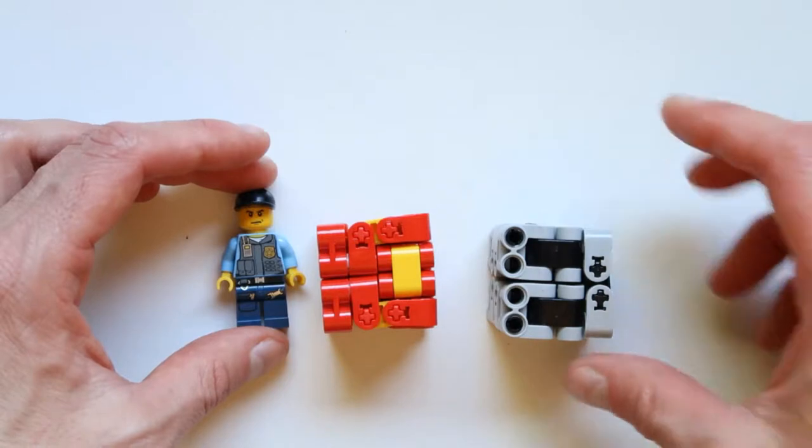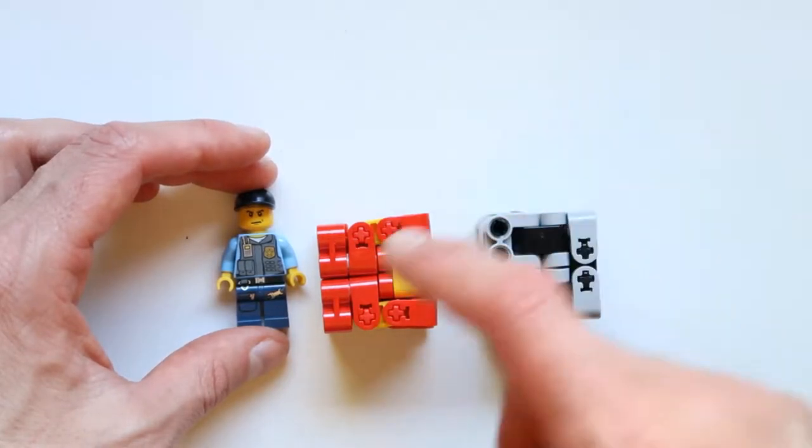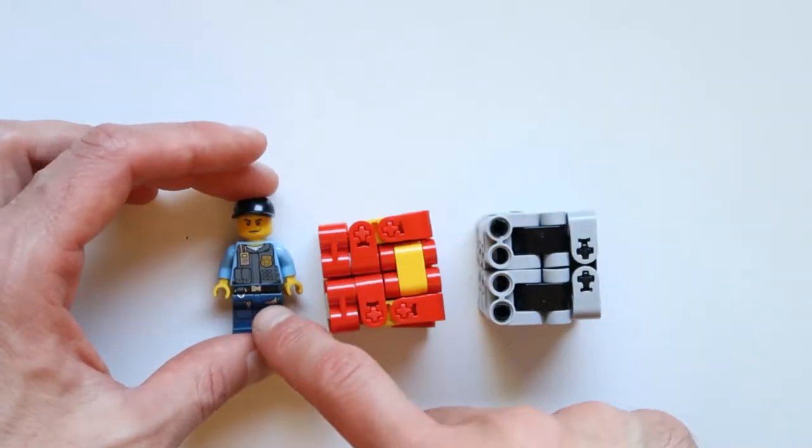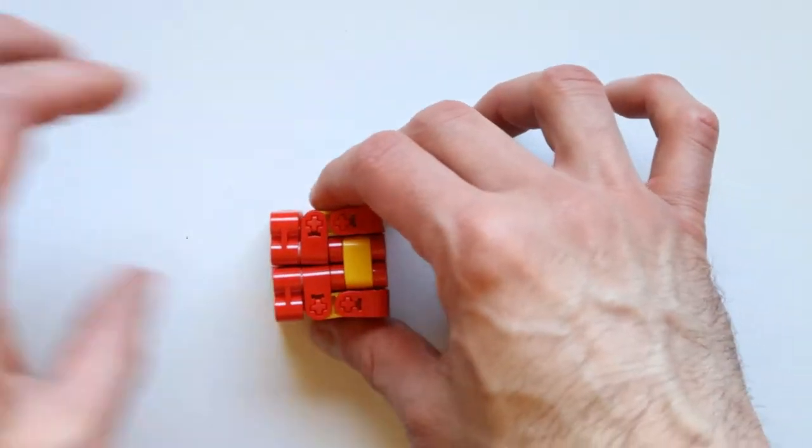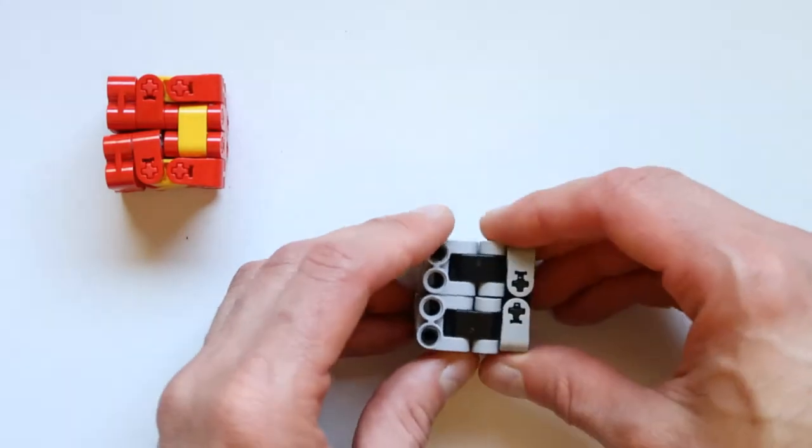So here is the red cube, here is the silver cube right here, and that's the size of my minifigure right there, just to see the dimensions. Now, I'll show you how interesting this cube actually is.